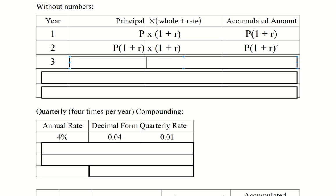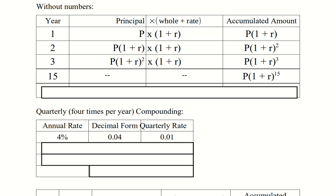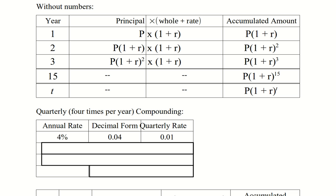The third year starts with the amount the second year ended with. Over the course of the third year, we multiply by 1 plus R again, giving us three factors of 1 plus R. Skipping to 15 years, the exponent is 15. And in general, at the end of t years, the exponent is t.